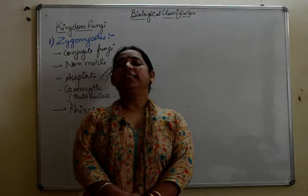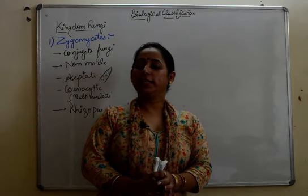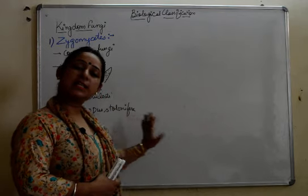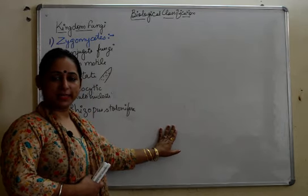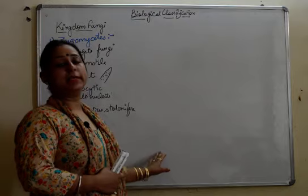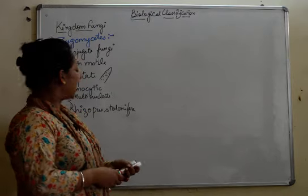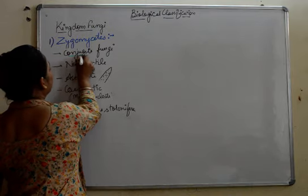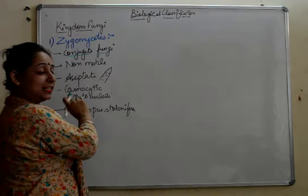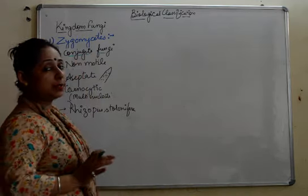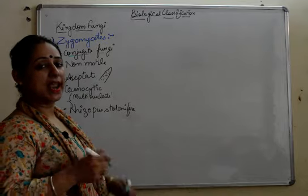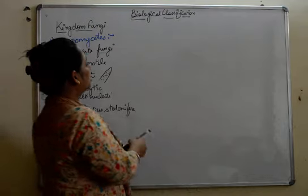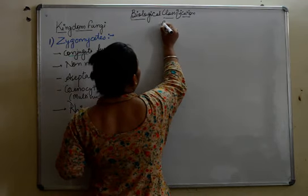Hello everyone. This video is in continuation to the previous video where we were discussing zygomycetes. We have discussed asexual reproduction in zygomycetes, and in this video we will be discussing sexual reproduction. Sexual reproduction takes place with the help of conjugation, that is why zygomycetes is very commonly known as conjugate fungi.